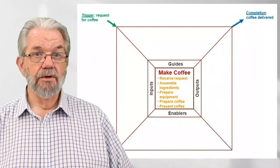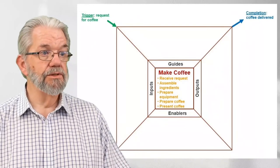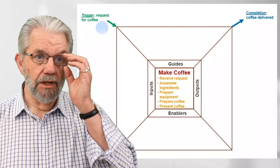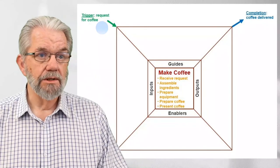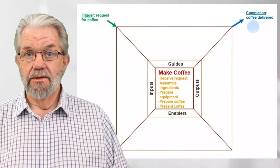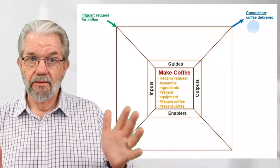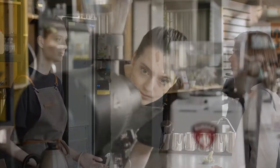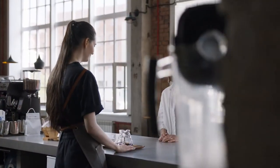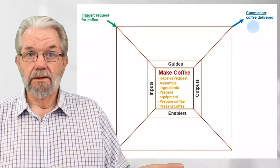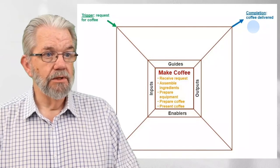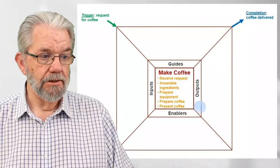One more important thing: we need to be very clear that we're all thinking about the same process. In the top-left and top-right, we say what triggers the execution of this process and how we know it's completed. Here, the trigger is a request for coffee, and it's completed when the coffee has been delivered — so it's everything from the request through to delivery. If it were a coffee shop, we might break it into three separate processes, but here it's kept simple.